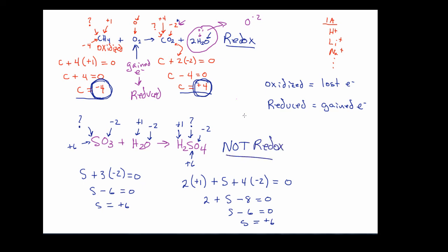To reiterate, here is the process: take the chemical equation, go through it and establish the oxidation numbers for each element, then inspect those numbers to see if any underwent a change. If there was a change, the reaction is a redox or oxidation-reduction reaction. You can then identify which reactant was oxidized — which lost electrons — and which was reduced — which gained electrons. As shown in the second example, if none of the elements changed oxidation number, the reaction is not redox.